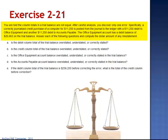Exercise 21. You're told the column totals in a trial balance are not equal. After careful analysis, you discover only one error. Specifically, a correctly journalized credit purchase of a computer for $11,250 is posted from the journal to the ledger with an $11,250 debit to office equipment and another $11,250 debit to accounts payable. The office equipment account has a debit balance of $26,663 on the trial balance. Answer each of the following questions and compute the dollar amount of any misstatement.